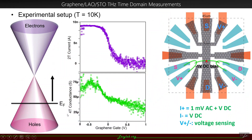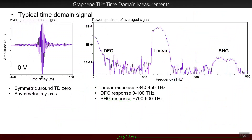We're going to take terahertz measurements of the graphene as a function of the Fermi level or gate voltage. A typical time domain signal is pictured here — this is when we have zero volts applied to the graphene. In a typical time domain signal, we have symmetry in the x-axis around time delay zero, and an asymmetry in the y-axis due to the nonlinearity of the device. We take the Fourier transform and look at the frequency components: the linear response, the difference frequency response which is terahertz generation, and a second harmonic response. We initially wanted to look at graphene's terahertz plasmonic response, but what we ended up seeing really surprised us.